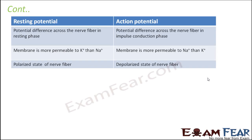Next is resting potential and action potential. Resting potential is the potential difference across the nerve fiber which exists when it is in the resting phase — that is, it is not conducting any impulse. Whereas action potential is when it is conducting an impulse; that is why the potential is in action, the potential is moving. In resting potential, the membrane is more permeable to potassium ions than sodium ions. Whereas in action potential, it is just the opposite — during the depolarized state, the membrane becomes more permeable to sodium ions, because voltage-gated ion channels open up and there is a rapid influx of sodium ions.